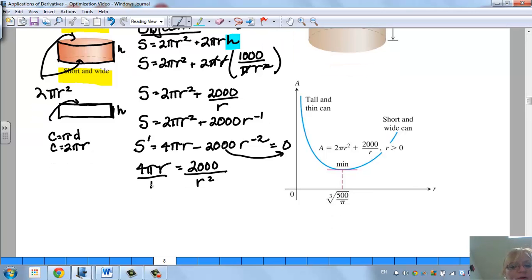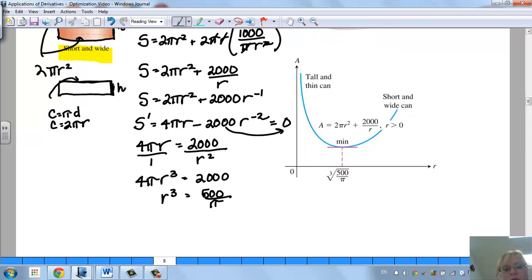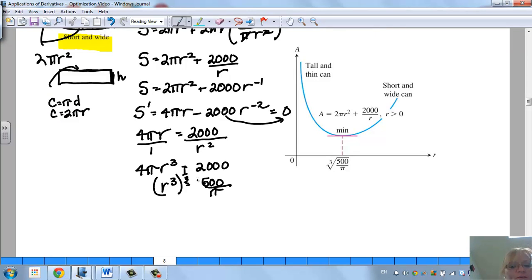Cross multiply, so I have 4 pi r cubed equals 2,000. And 4 and pi are constants. So if I divide by 4 pi, I have r cubed equals, and 2,000 divided by 4 is 500. So it's really 500 all over pi. And then you're going to raise each side to the 1 third, or cube rooted, same difference. So r is going to equal roughly 5.42, and we're talking centimeters.